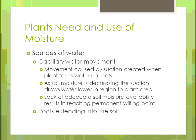For capillary water management, it's the movement caused by suction created when a plant takes water up through its roots. As soil moisture decreases, suction draws water to the lower region of a plant's area. If there isn't enough soil moisture available, you reach the permanent wilting point discussed earlier. When a plant doesn't get enough water, the roots try to extend deeper and deeper into the soil to find moisture — sometimes finding it, sometimes not.